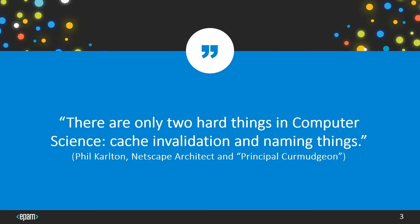There are only two hard things in computer science: cache invalidation and naming things. I don't think cache invalidation is a problem any longer, but naming things is perennially hard. Phil Carlton famously said this — he was the principal curmudgeon at Netscape, a very famous architect, and he said this about 25 to 30 years ago. The point is, naming is hard, but it's worthwhile to work on.